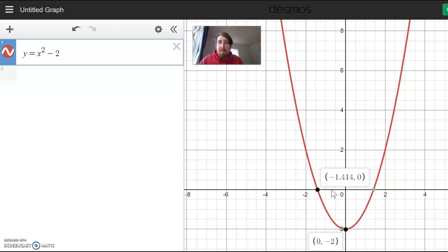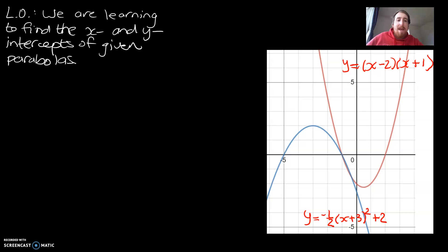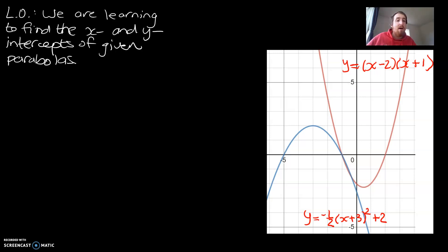What I'm going to do is pause the video here, get back onto PowerPoint with some examples, and we're going to calculate the x and y intercepts of given parabolas. Okay guys, we are back on PowerPoint and I've got an example on the right-hand side. We're going to do two questions start to finish with the x and y intercepts — starting with that red graph and then moving on to a harder version with the blue graph.